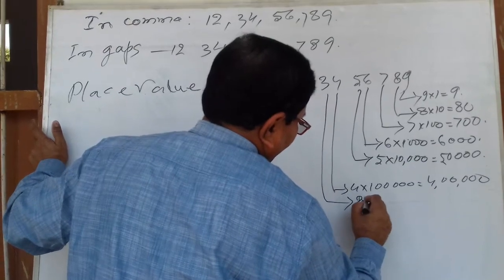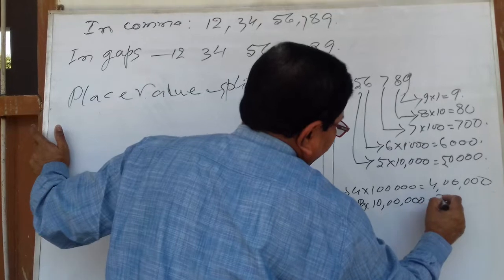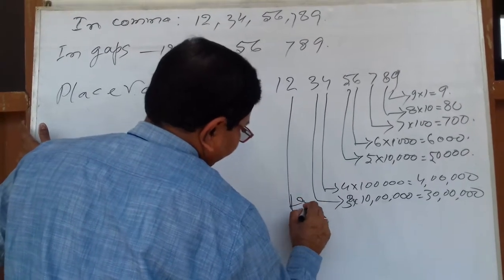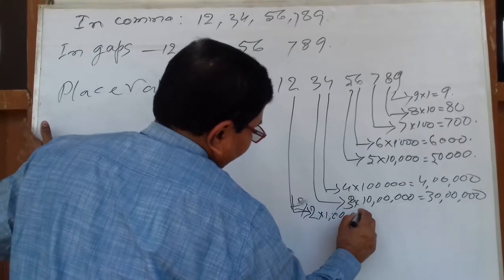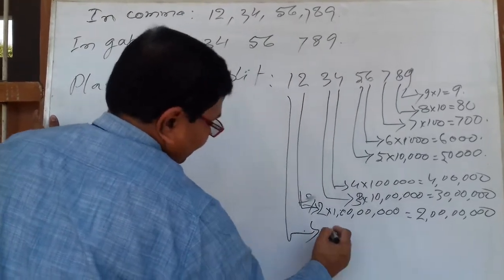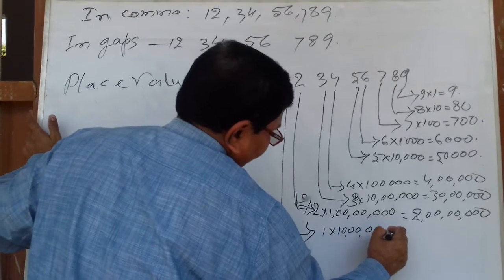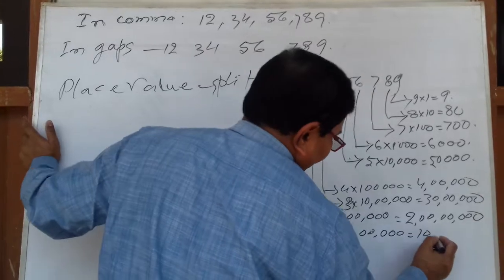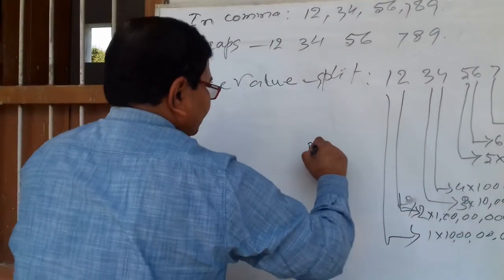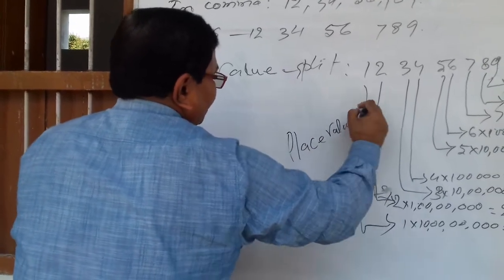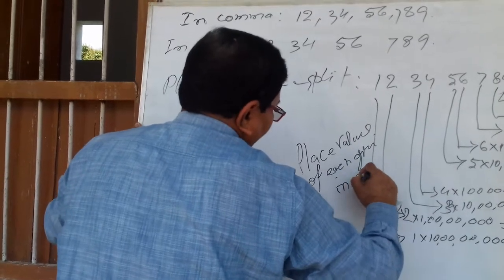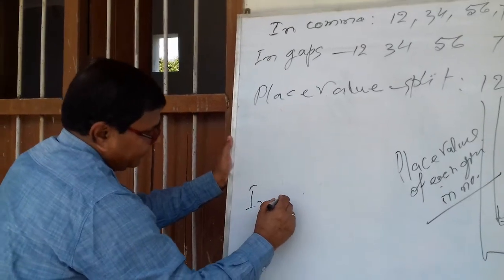Five into ten thousand is equal to fifty thousand. Four into one lakh is equal to four lakh. Three into ten lakh is equal to thirty lakh. Two into one crore is equal to two crore. One into ten crore is equal to ten crore. These are the place values of each digit in the number in expanded form.